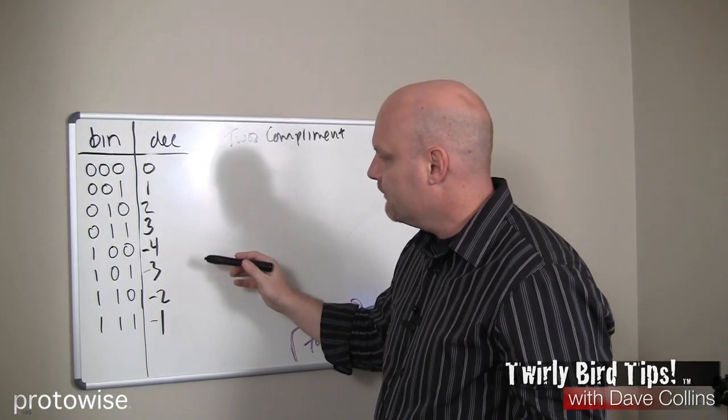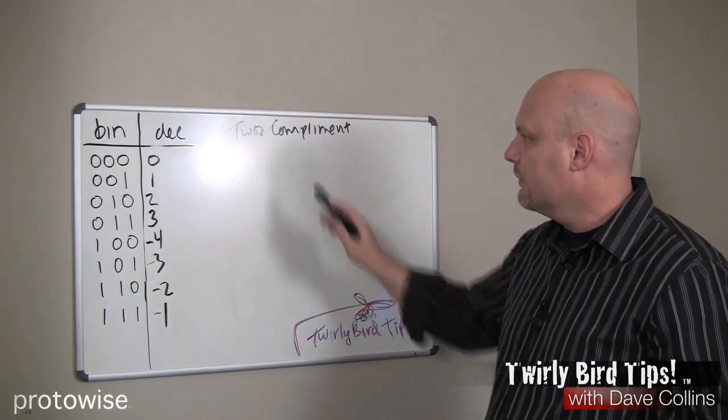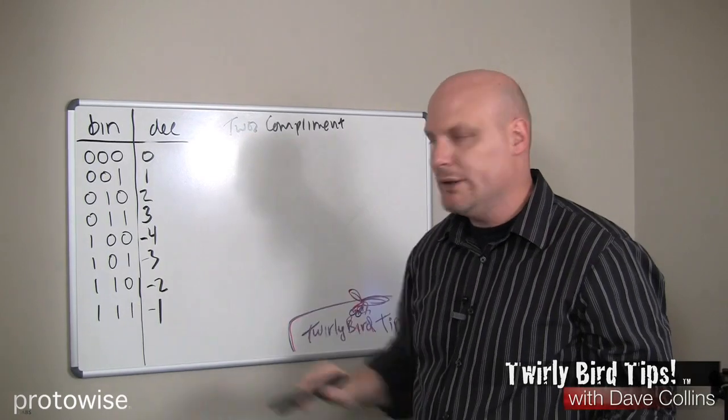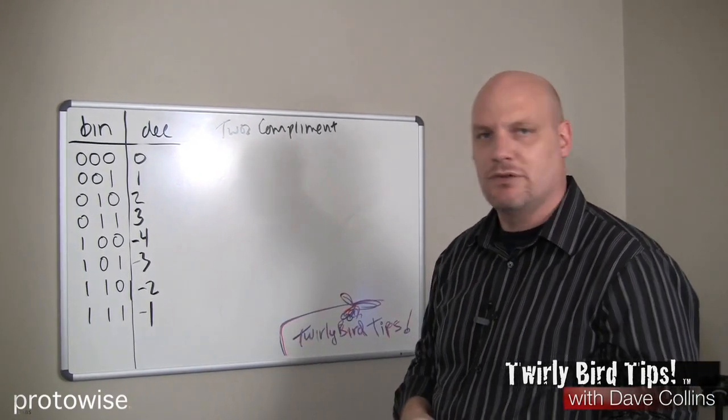Let's look at the first thing. Negative 1 is always going to be all 1s. No matter how many bits you have in a two's complement system, negative 1 will be all 1s. If we had a 16-bit system, negative 1 would be represented by 16 bits.